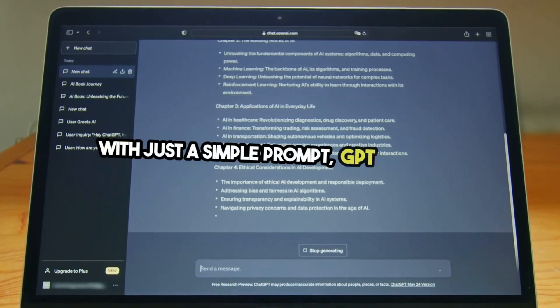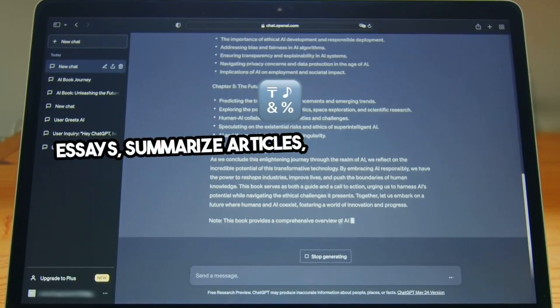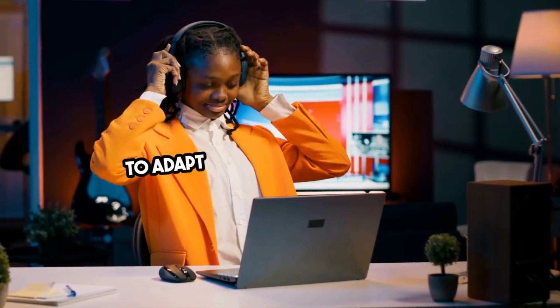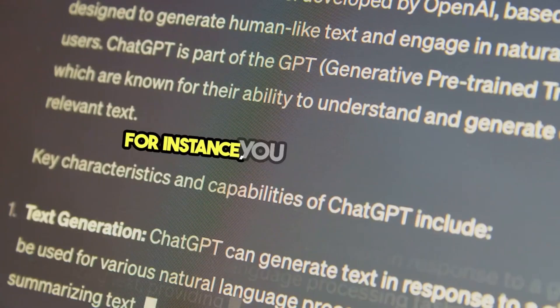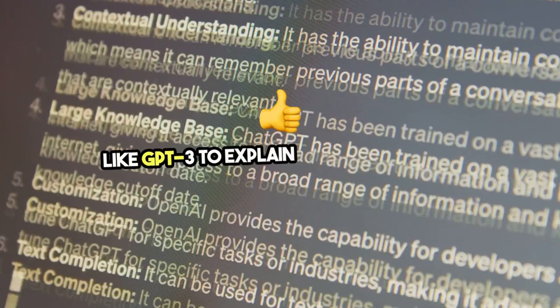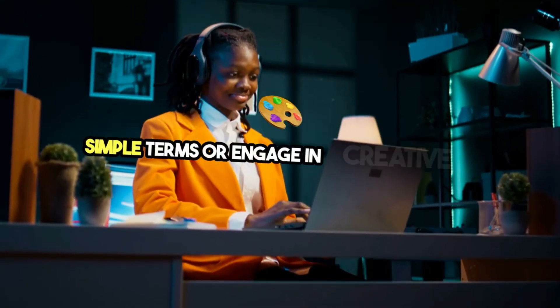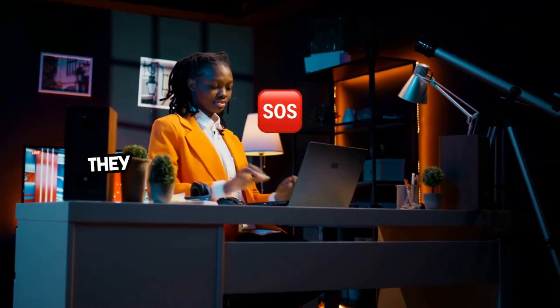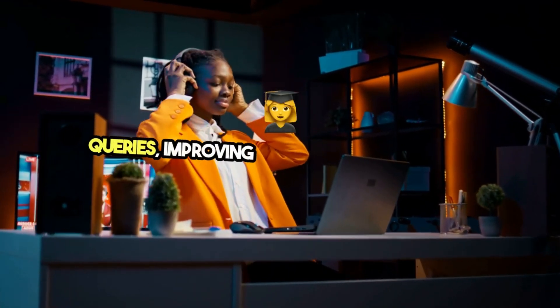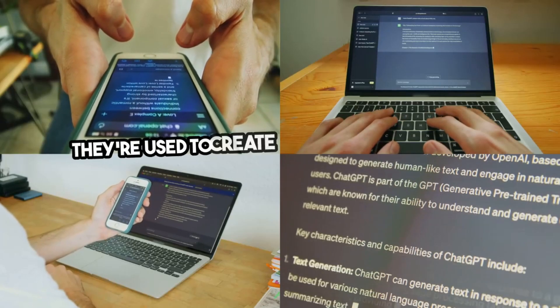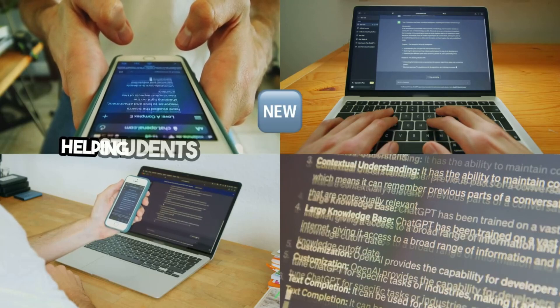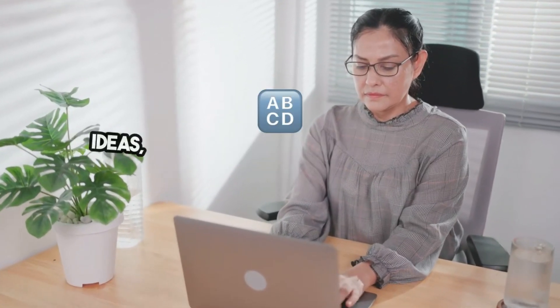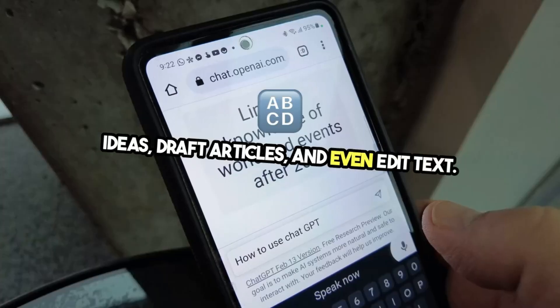With just a simple prompt, GPT can write essays, summarize articles, generate poetry, and even code. What makes LLMs so powerful is their ability to adapt to a wide range of tasks. For instance, you can ask a model like GPT-3 to explain complex topics in simple terms or engage in creative writing. LLMs are now used across various industries. In customer service, they help automate responses to common queries, improving efficiency. In education, they're used to create personalized tutoring experiences, helping students understand topics in new ways. Writers and content creators use LLMs to brainstorm ideas, draft articles, and even edit text.